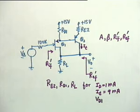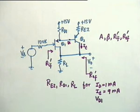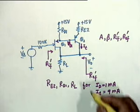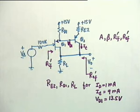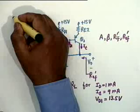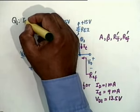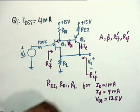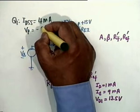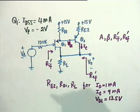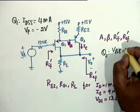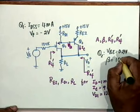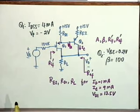VD1 — this voltage to ground — is equal to 13.5 volt. The transistors have the following parameters. For Q1: IDSS is given as 4 milliampere and VP is given as minus 2 volts. For Q2: VBE is 0.7 volt, and what we need most is beta. Beta is 100.